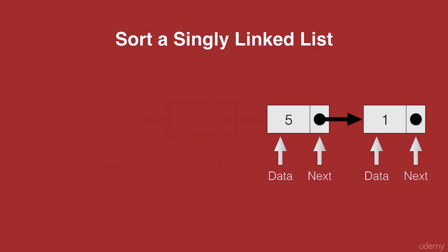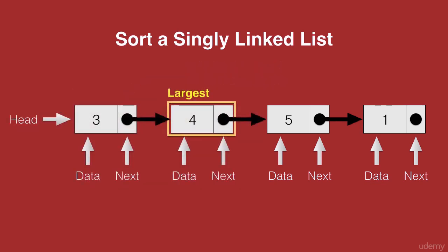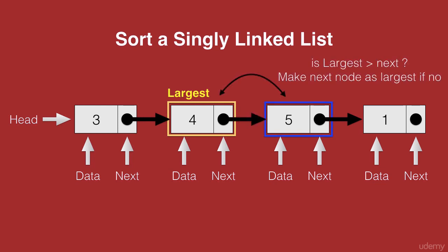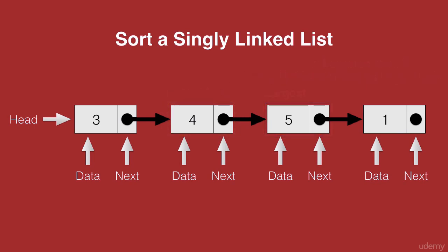So their positions get swapped — 3 is now in the first position and 4 goes to the second position. Now we check largest with the next of largest. This time, the next of largest has the node 5. On checking 4 with 5, we see that 4 is less than 5. So if largest is lesser than your next node, we make the next node as largest. So now 5 is made as the largest node.